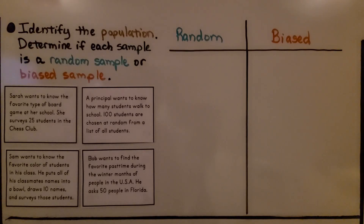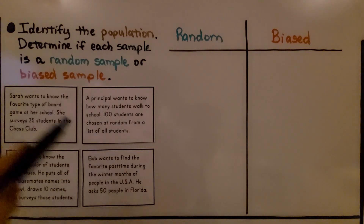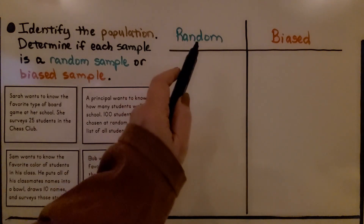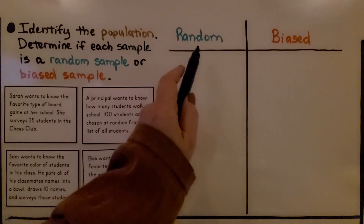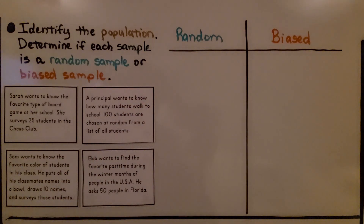We need to identify the population and determine if each sample is a random sample or a biased sample. We have four examples, and we can put them either on the random side or the biased side.